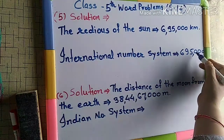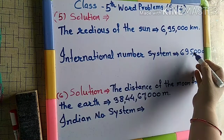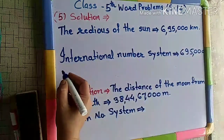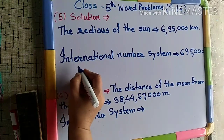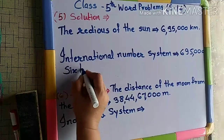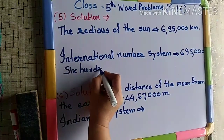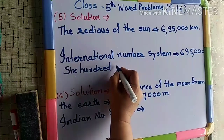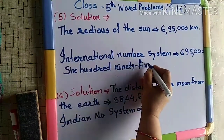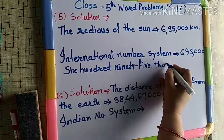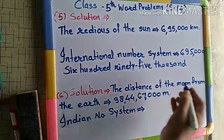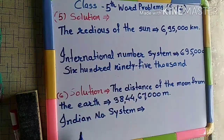One's place stands for 100,000; ten thousands is 10,000; hundred thousands is 100,000. We will write the number name in the international number system like 6,95,000. This will be the number name in the international number system.